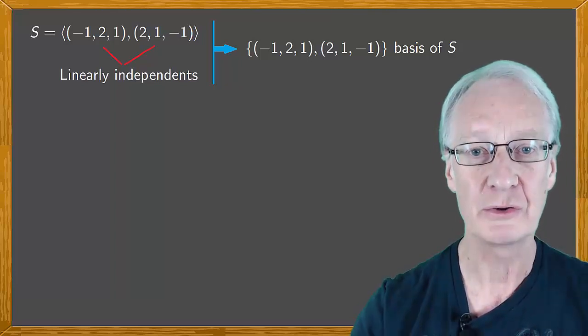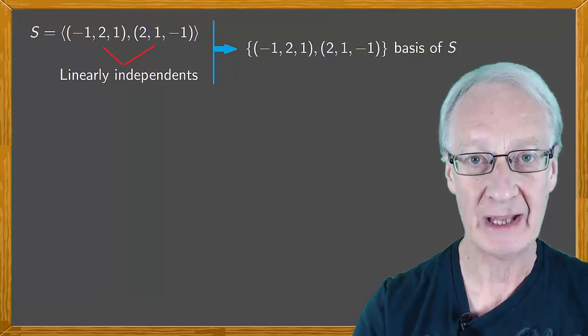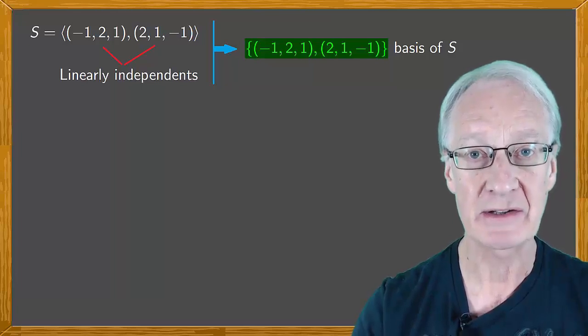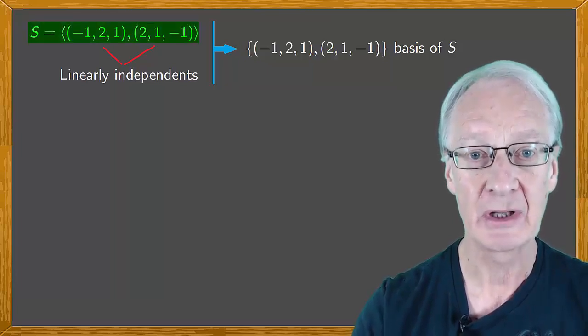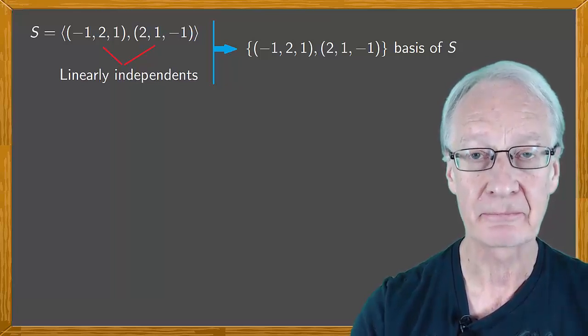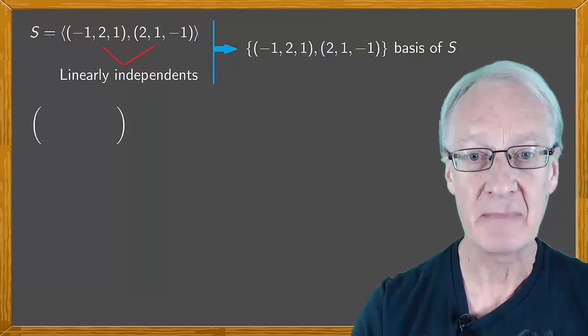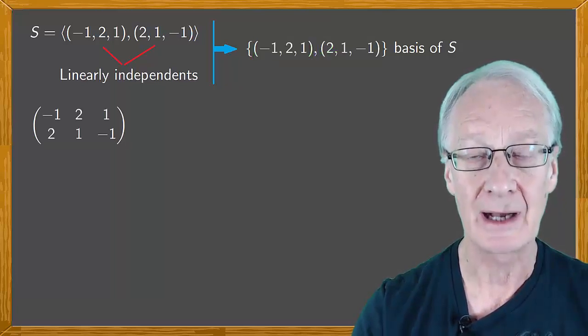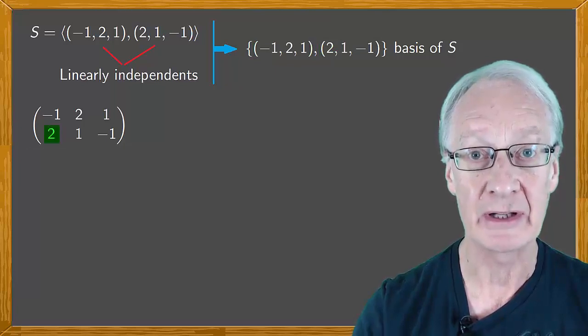What we'll do is obtain a system of vectors equivalent to the one given. In other words that generates the same S but we will do zeros on our vectors. So we'll consider the matrix in which our vectors are the row vectors. Now we'll make zeros under the diagonal.